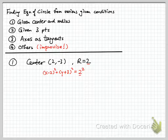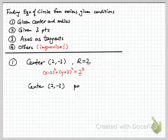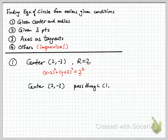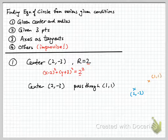Given the center and the radius, that would be the equation of the circle. Sometimes you will not have the radius directly, but it's only one step away. For example, the center is at (2, -3) and it passes through the point (1, 1). It doesn't tell you how long the radius is, but knowing the center and that it passes through (1, 1), we can find the circle from here.